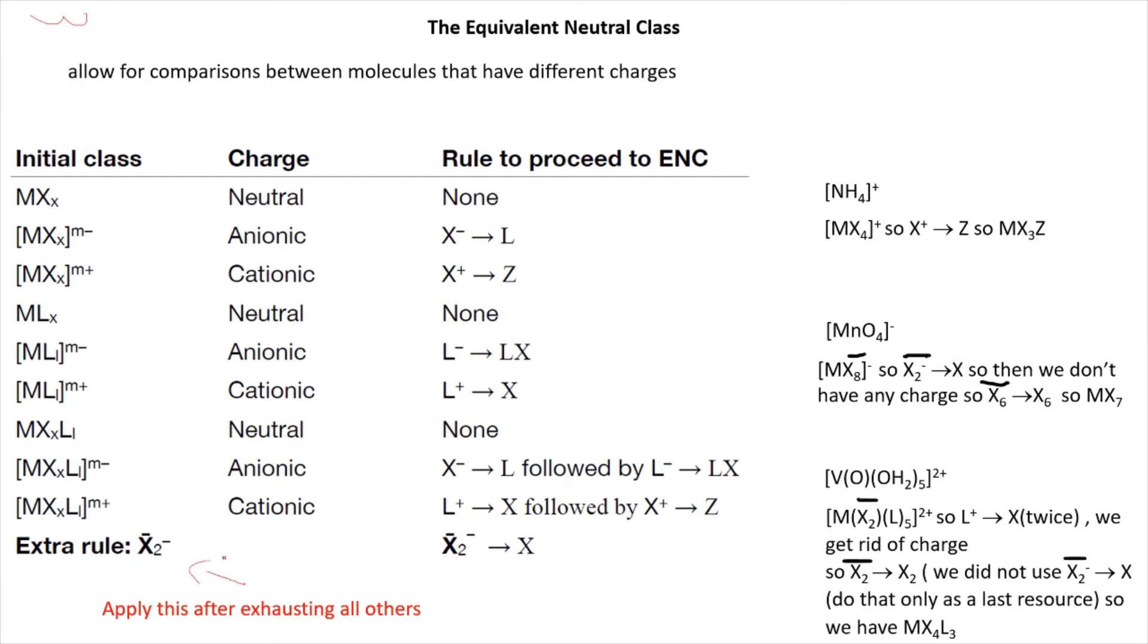I just want to mention this last rule: X2 minus bar goes to X, and this is the rule that we are using as a last resort. In the second example we only have X bar ligands, so X2 bar minus goes to X. In the third example we have X2 bar and L5, and then we have a 2 plus charge, so we're dealing with this 2 plus charge using L ligands. L plus goes to X twice, and then we're dropping the bar because we don't have any charge anymore, ending up with MX4L3.